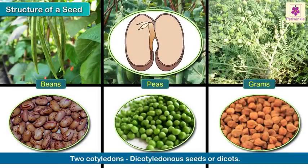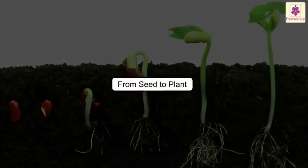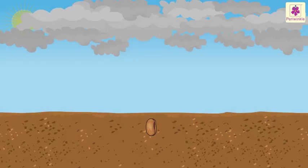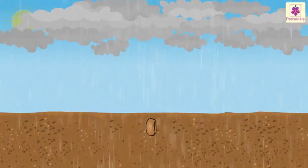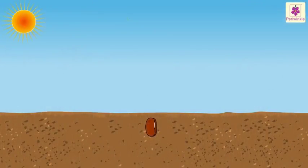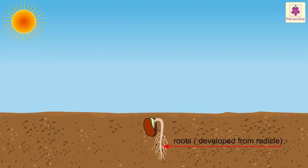Now let us see how a seed grows into a plant. The dry seed absorbs water and swells out. As the seed swells, the seed coat splits and a small white structure comes out. This is called the radicle. The radicle grows downwards into the root.